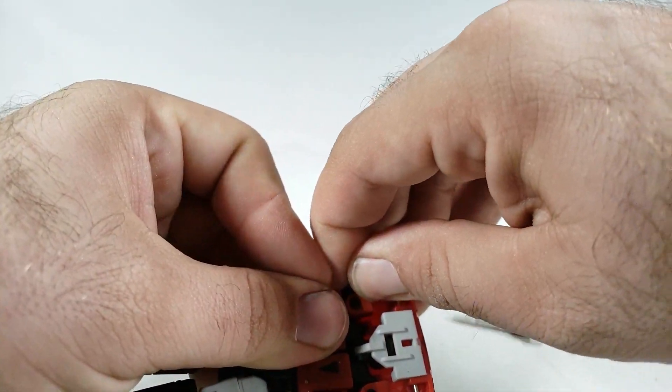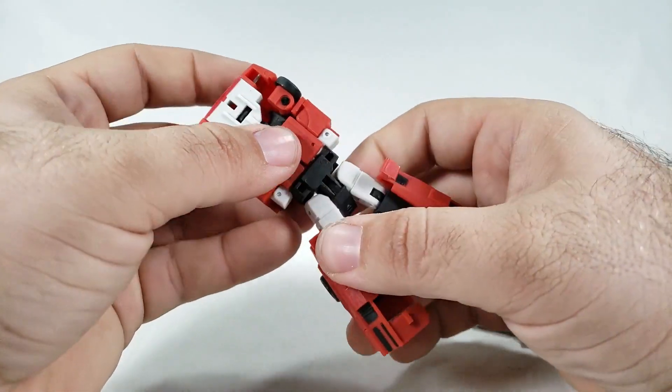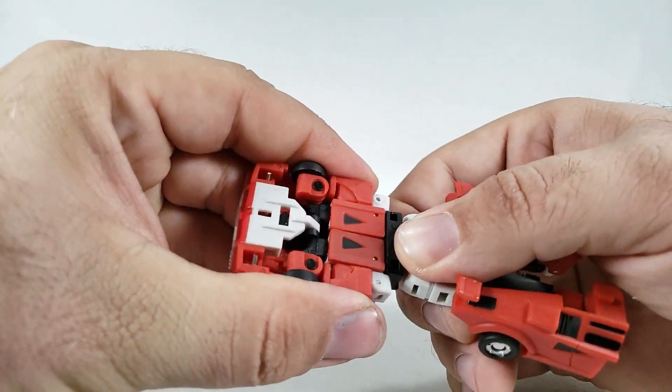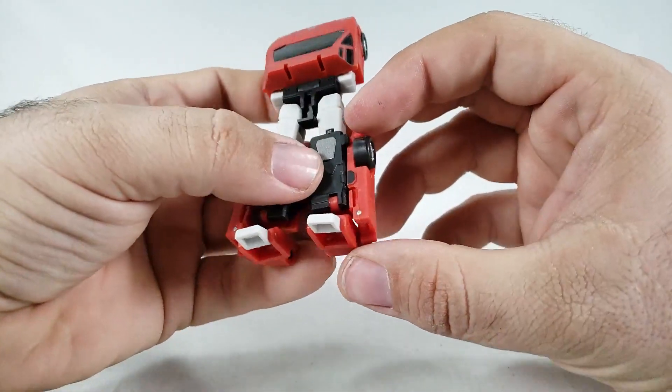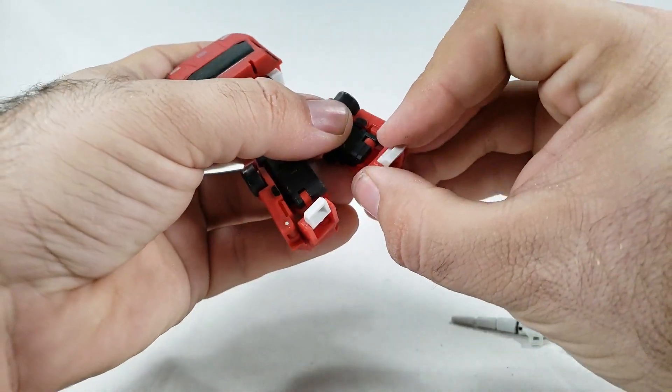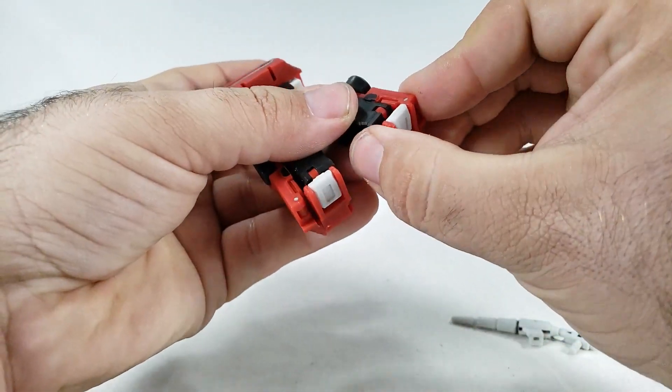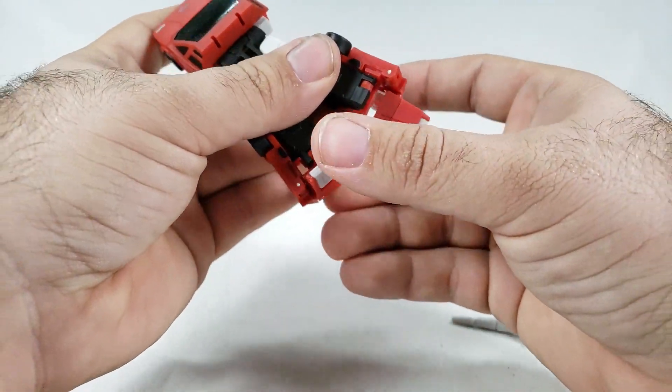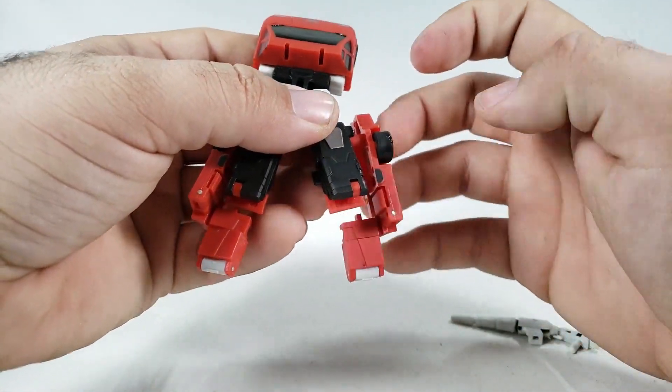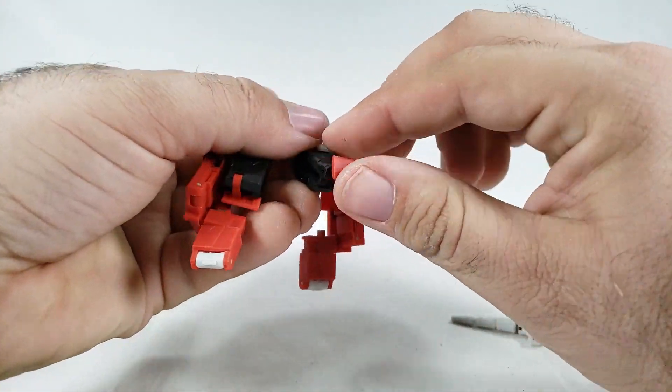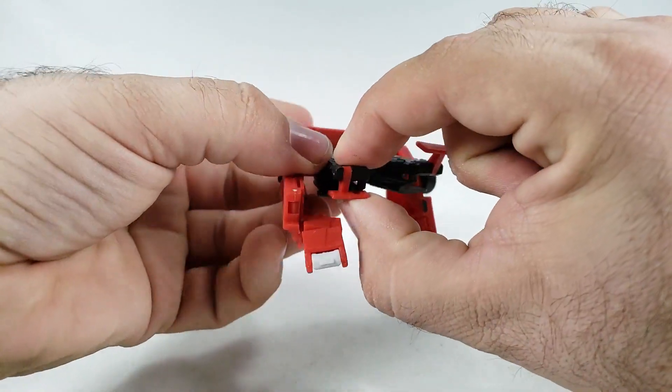And once again, those plastics just don't feel great. They just feel weak and not happy. Okay. Now for the legs. These are also kind of complex. Fold your toes in. Fold them down like so on that back hinge. And you want to swing this guy out this way and out that way. And move the spoiler up and out.